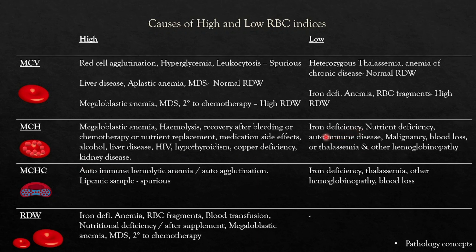Low MCH is seen in iron deficiency, nutritional deficiency, autoimmune disease, malignancy, blood loss, thalassemia, and other hemoglobinopathies. MCHC: autoimmune hemolytic anemia and autoagglutination cause high MCHC, which is almost always spurious. Low MCHC is seen in iron deficiency, thalassemia, other hemoglobinopathies, and blood loss. High RDW is seen in iron deficiency anemia, schistocytes, blood transfusion, nutritional deficiency or after nutritional supplementation, megaloblastic anemia, and MDS secondary to chemotherapy.